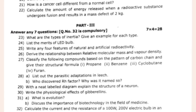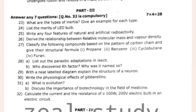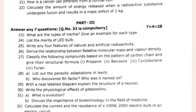How is a cancer cell different from a normal cell? Calculate the amount of energy released when a radioactive substance undergoes fusion and results in a mass defect of 2 kg. So for example, try to do 3-mark, 4-mark — have to do 23, 25, 25, 26, 27. It is a complete summary of the exam.